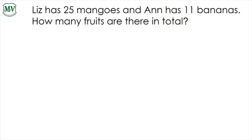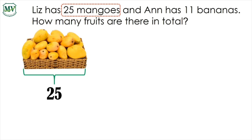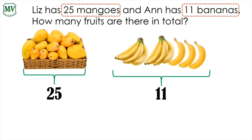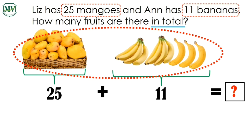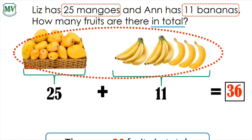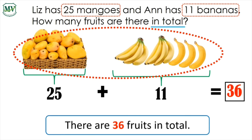Let's solve. We understand that there are 25 mangoes and 11 bananas. The question is, how many fruits are there in total? Let's add: 25 plus 11 equals 36. Therefore, there are 36 fruits in total.